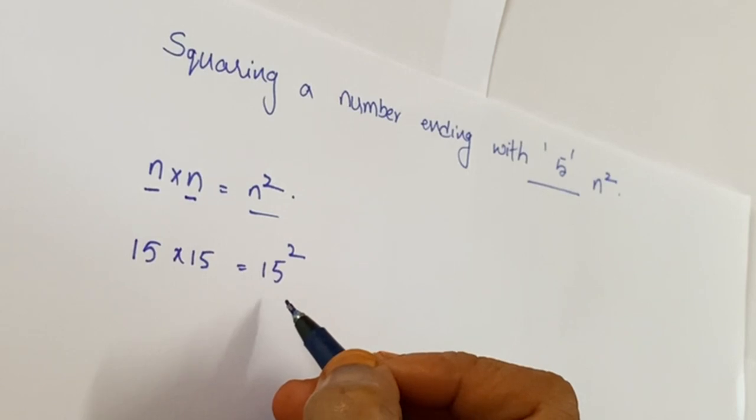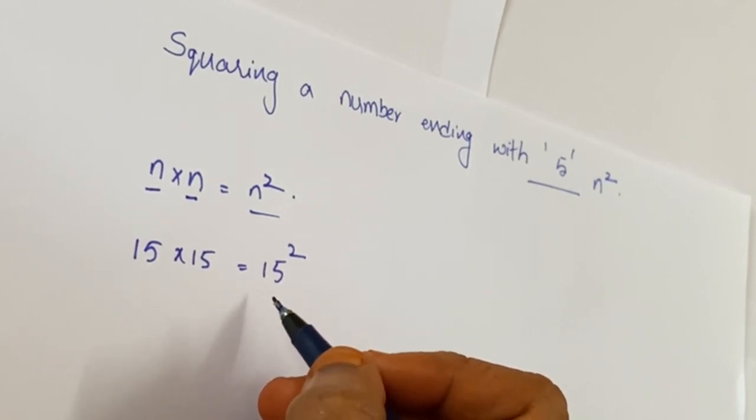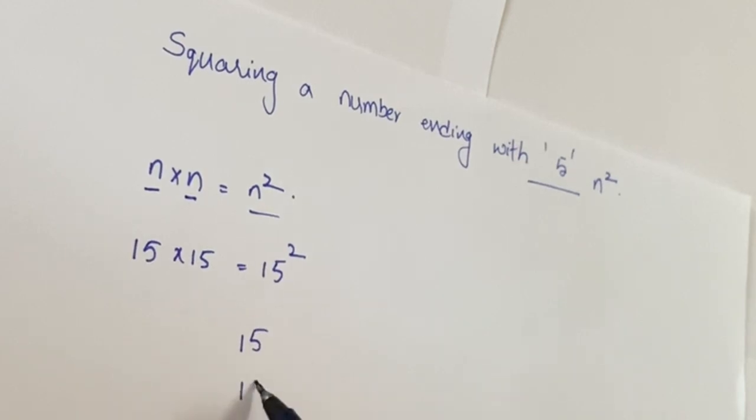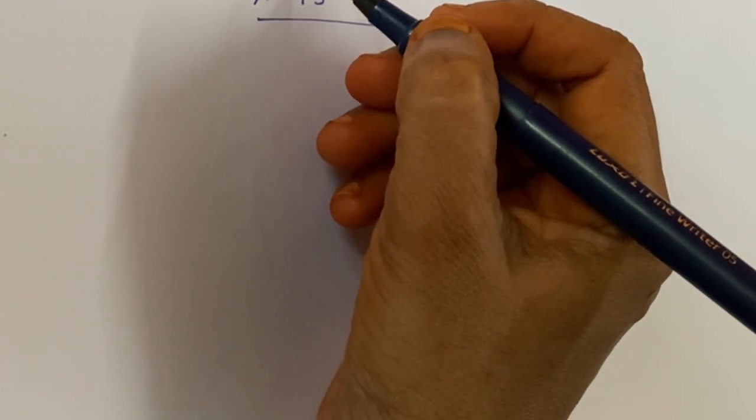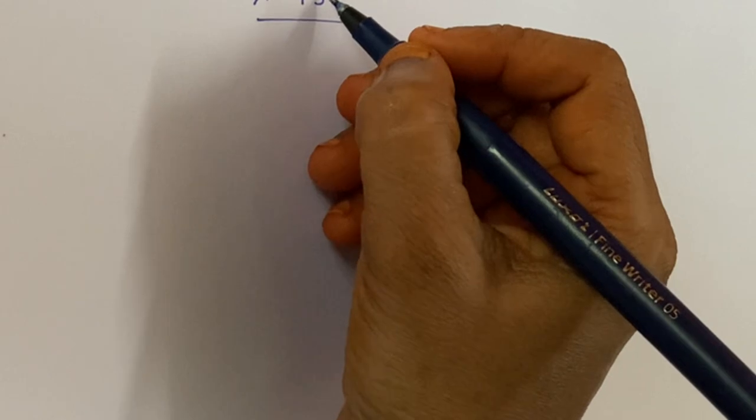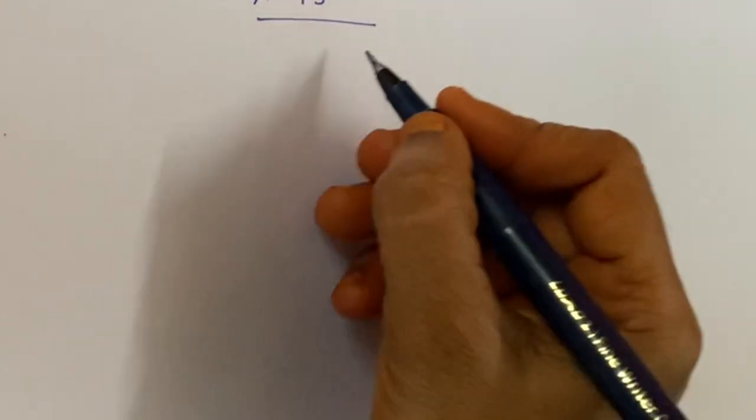We will learn how to multiply this within seconds. In the traditional method we multiply and get the answer, but this is a very easy method. Here you multiply 5 × 5, that is 25. Squaring the 5 gives 25.